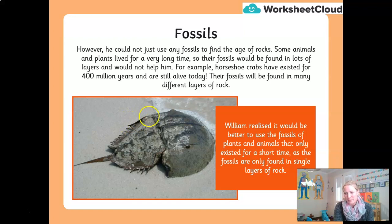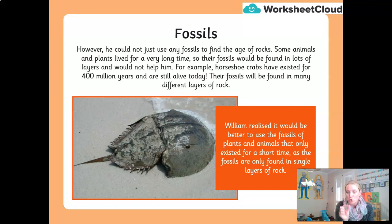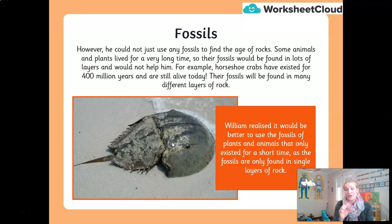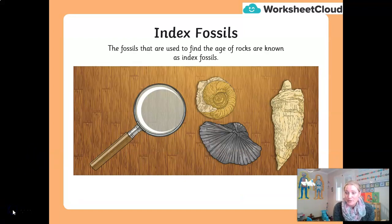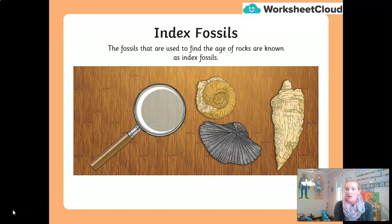William Smith realised he had to use fossils of plants and animals that only existed on Earth for a short period of time before they became extinct. He was then able to figure out how old a rock was, because they were only present in certain layers. Those fossils are called index fossils — like the index of a book, they tell you the order and where you find things. Index fossils are fossils we can use to find out the age of a piece of rock.